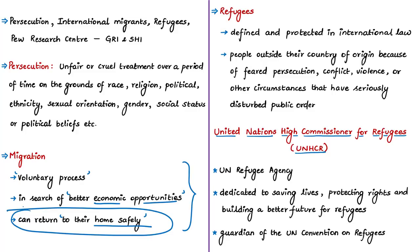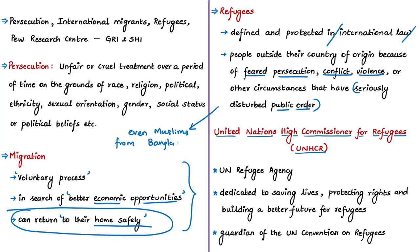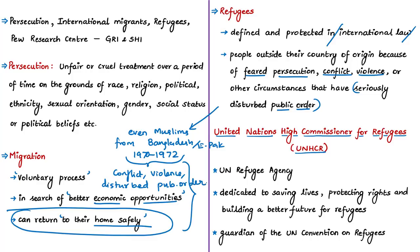Refugees are specifically defined and protected under international law and human rights standards. They are people living outside their country of origin due to feared persecution, conflict, violence, or circumstances seriously disturbing public order. In light of this definition, international experts note that Muslims who came to India from Bangladesh or East Pakistan in 1970–72 should be considered refugees, given the conflict and violence in that region at the time. Refugees who cross borders seek safety in nearby countries.